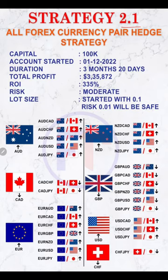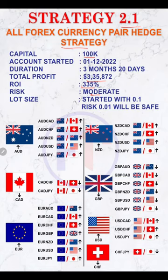This strategy is named based on the head strategy. It was initiated with 100k capital and started on 1st December 2022. Over almost four months, the total profit is 335,000, which means nearly 335% plus. It is currently connected with a moderate risk, starting with a 0.1 lot size. On the same 100k capital, starting with 0.01 lot size would make it an extremely safe strategy.